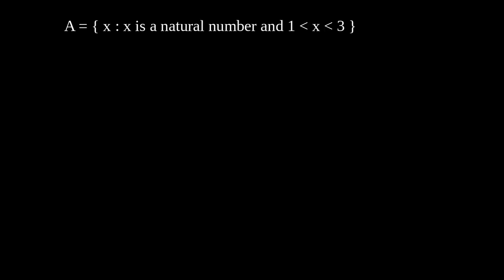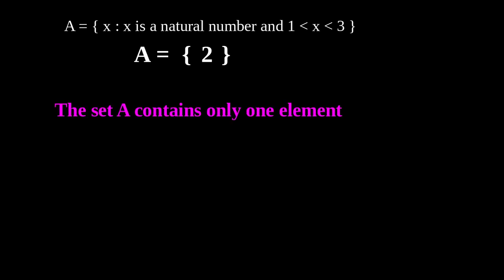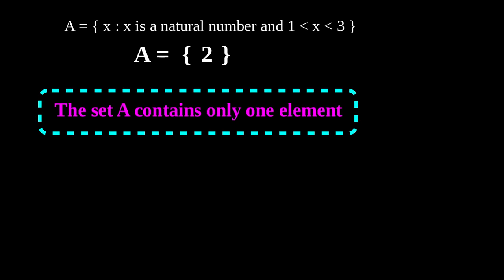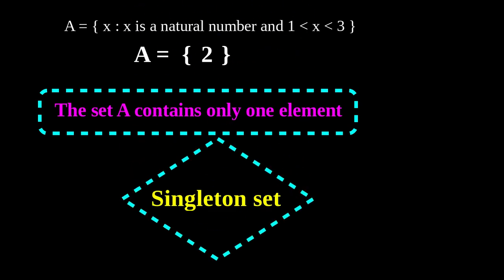Now the second type. See the example: A equals the set of all x such that x is a natural number and 1 less than x less than 3. How many elements are there in set A? There is only one natural number between 1 and 3, that is 2. It means that the set contains only one element. Such sets are called singleton sets.